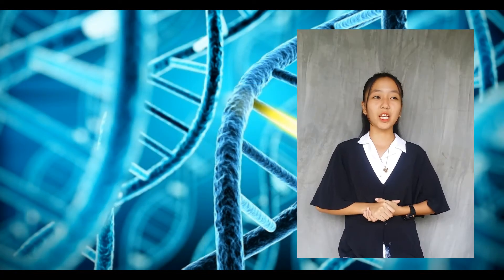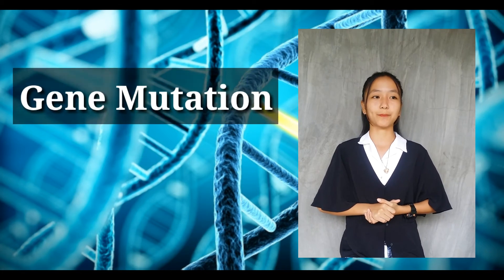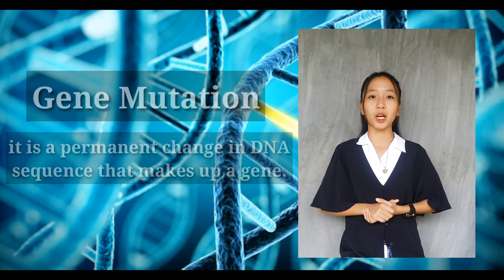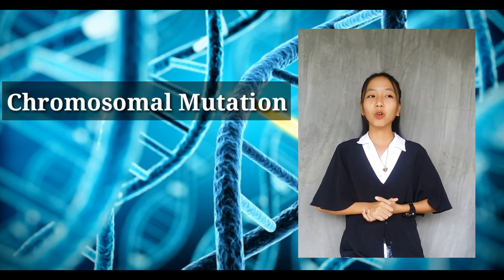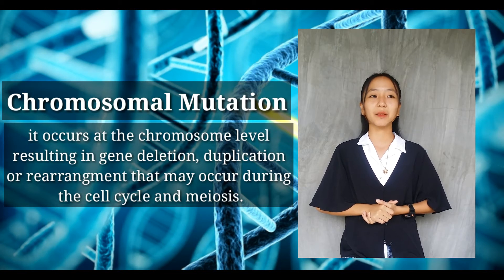There are two types of mutations that can occur in gamete cells. The first one is gene mutation, which is a permanent change in the DNA sequence that makes up a gene. The other one is chromosomal mutation, which occurs at the chromosome level resulting in gene deletion, duplication, or rearrangement that may occur during the cell cycle and meiosis.